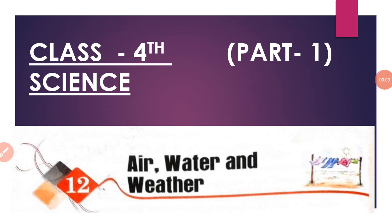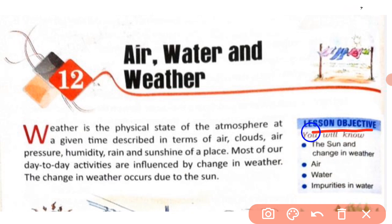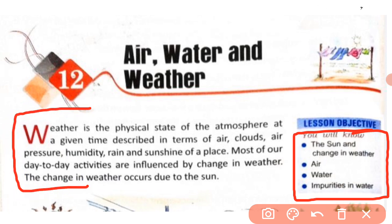Hello everyone, today we are going to start another chapter of Class 4th Science — Chapter 12: Air, Water and Weather. In this chapter we will discuss about the sun and change in weather, air, water, and impurities in water. Let us start with a brief introduction of Chapter 12: Air, Water and Weather.